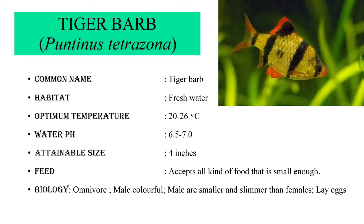Tiger barb is the next ornamental fish. It is scientifically called as Puntigrus tetrazona and commonly called as Tiger barb. It will be present in freshwater. The optimum temperature in which it survives well is 20 to 26 degrees C and the water pH should be 6.5 to 7.0. During its lifespan, it attains a maximum size of 4 inches. It accepts all kinds of food that are small enough. This fish is an omnivore. It reproduces by laying eggs and the male is smaller and slimmer than the female. The male is colourful.